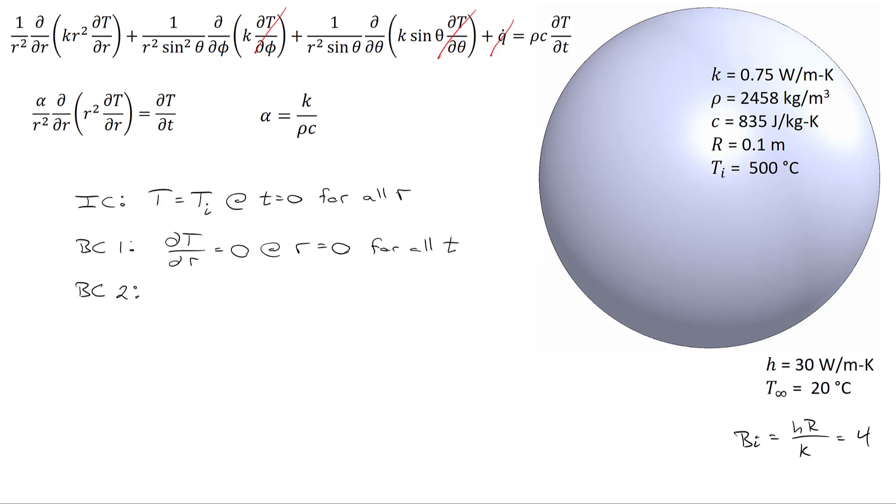The second boundary condition applies at the surface of the sphere, and that's balancing the conductive flux, negative k dT/dr, with the convective flux, which is H times the temperature at the surface minus T infinity, and this is applicable at R equals capital R for all time.